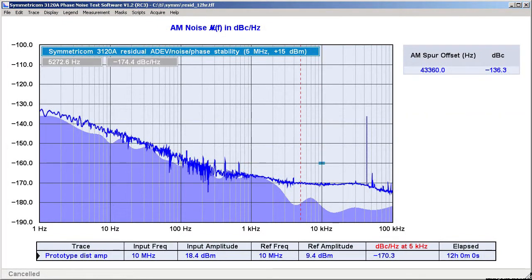AM noise is well characterized beyond 2 kilohertz, and it's a bit worse than the phase noise contribution. Again, below 1 kilohertz, we're looking almost exclusively at the 3120A's own noise.